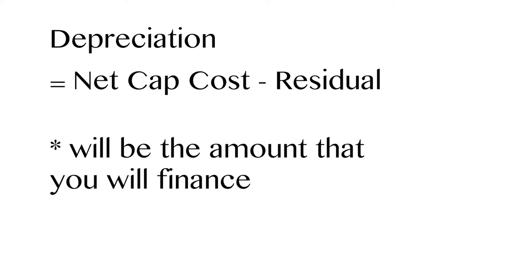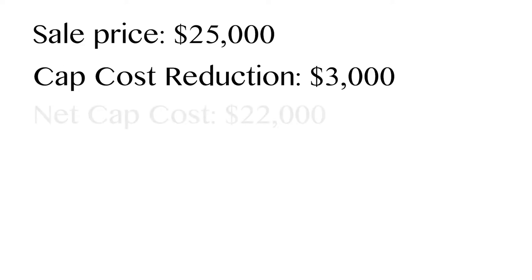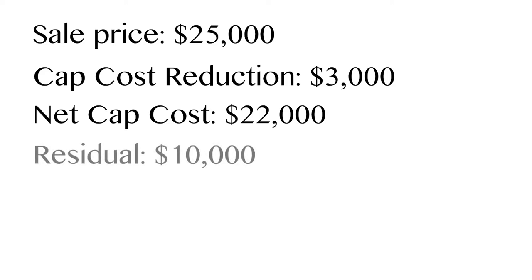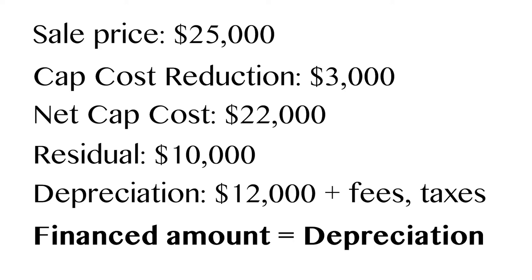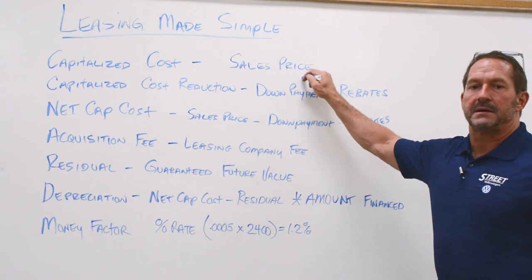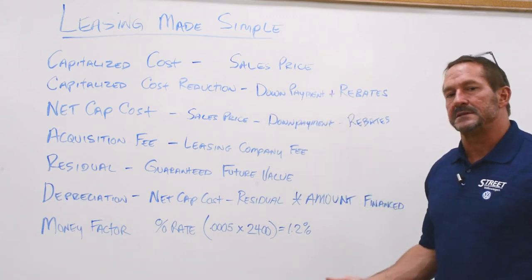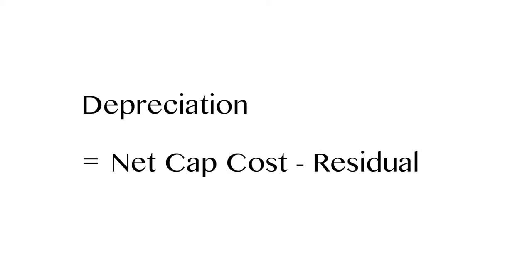Then of course you have the depreciation. The depreciation is going to be the net cap cost — which was the sales price less down payment and rebates — minus the residual. What's interesting is the depreciation is all that's going to show up on your credit bureau that you're financing. So let's say the sales price was $25,000. You have a $1,000 rebate and you put $2,000 down, which brings it down to $22,000. So your net cap cost was $22,000 plus fees, and you have a residual of $10,000. The amount you're going to be financing is $12,000 plus fees and taxes — let's say $14,000. So instead of borrowing $25,000 plus tax, title, and license, you're only borrowing $14,000, and that's what's going to show up on your credit bureau. That's the depreciation — the net cap cost minus the residual.